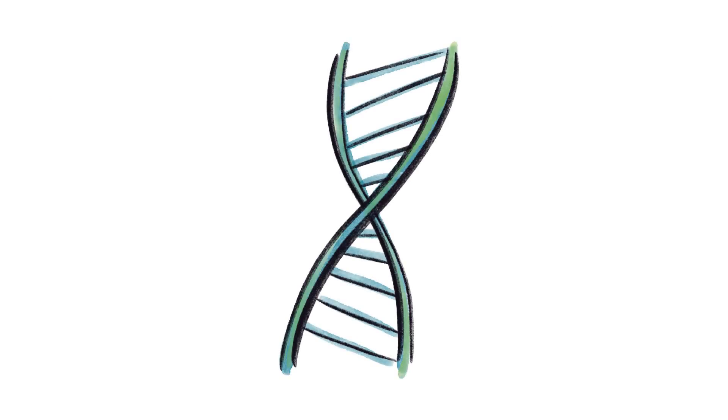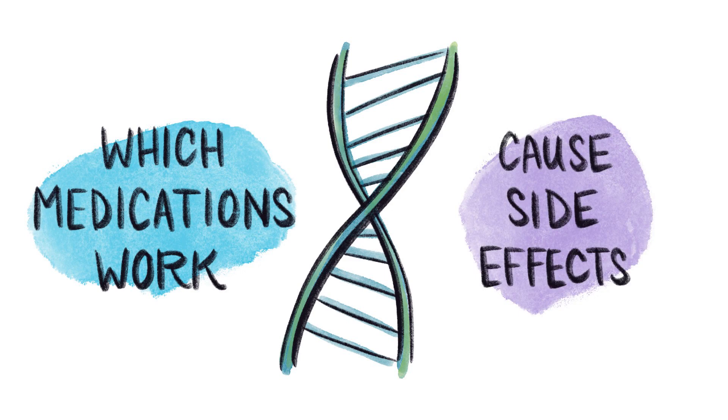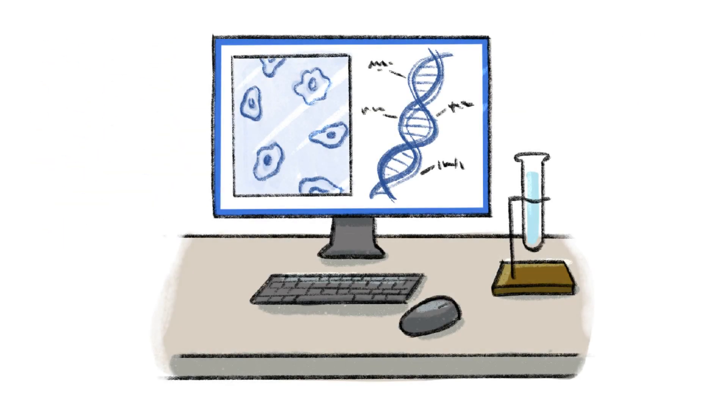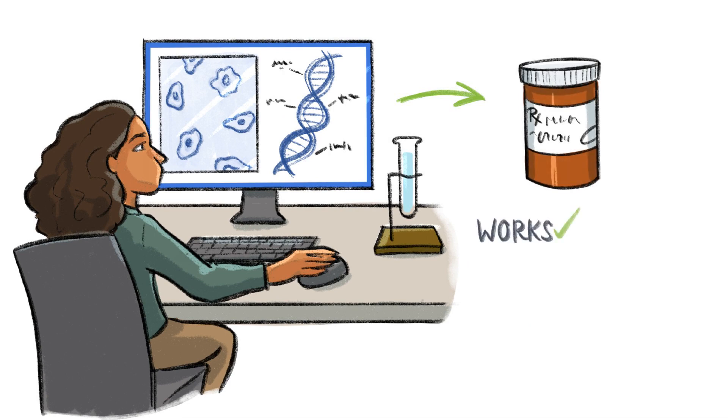Our genes are thought to partly determine which medications work and whether they'll cause side effects. Pharmacogenomic tests look at a person's genes to help them find a medication that's likely to work for them, while avoiding serious side effects.